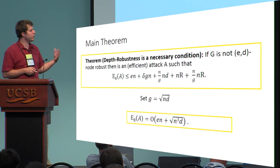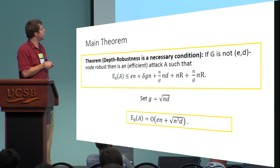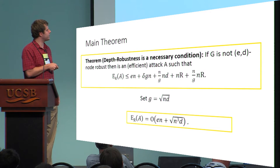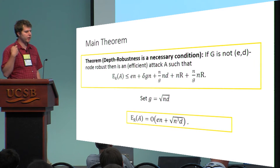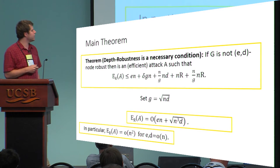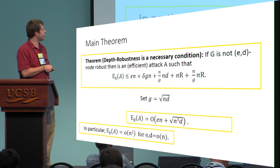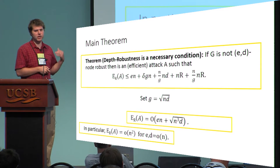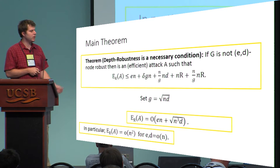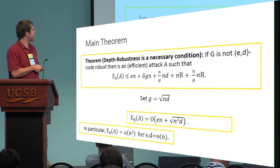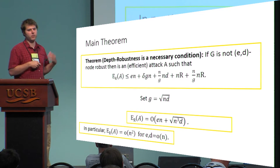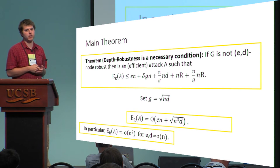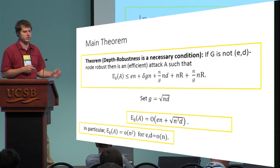Setting our parameters appropriately, we get a refined energy complexity. In particular, if e and d are both sublinear, then the energy complexity is subquadratic, which is bad.